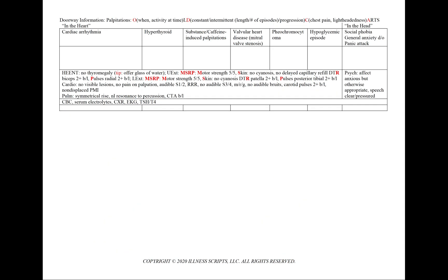For a case of palpitations, using our mnemonic OLD CARDS as our guide, we'd like to note the onset — or when do they start. For duration, it is unlikely to be having palpitations constantly the entire day, so we'd like to note the frequency: how long do they occur for, and how many episodes are you having per day or per week?